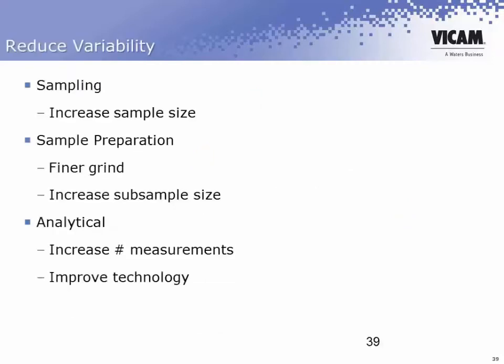So in terms of reducing that variability, we mentioned that there were several components: the sampling component, the sample preparation, and the analytical method. Things that can be done to reduce the variability due to sampling are increasing the sample size, using a finer grind, and doing a number of subsamples from the original sample.